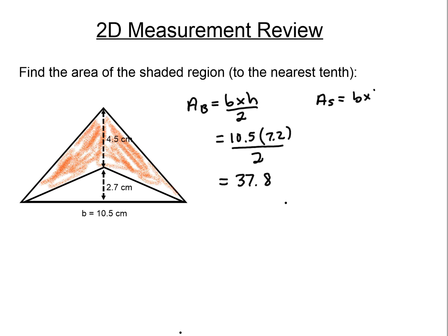So again, we write our formula, we show our work. So the base is still 10.5, but this time the height is 2.7. Then we punch that into our calculator and we get our answer.